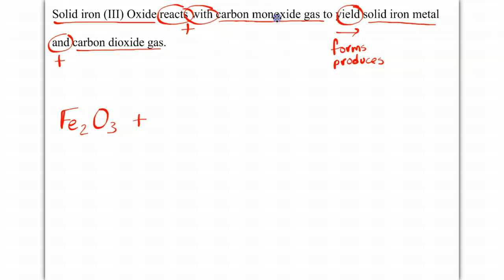Reacts with indicates that I need a plus sign. And then carbon monoxide gas is covalent, which is gonna be CO. Yield means I draw my arrow. Solid iron metal, that's gonna be Fe for iron. And because they told me it's solid, I'll put a little s.